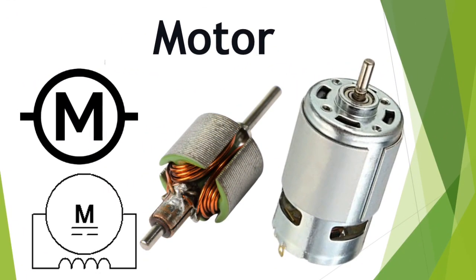Then here we have the motor. Basically, the motor contains inside it a rotor and stator. This is the stator — the fixed part where we have the inductors. And this is the rotor — the rotating part. Basically, this is the symbol for the motor. As you can see, we have M here, or this symbol also.